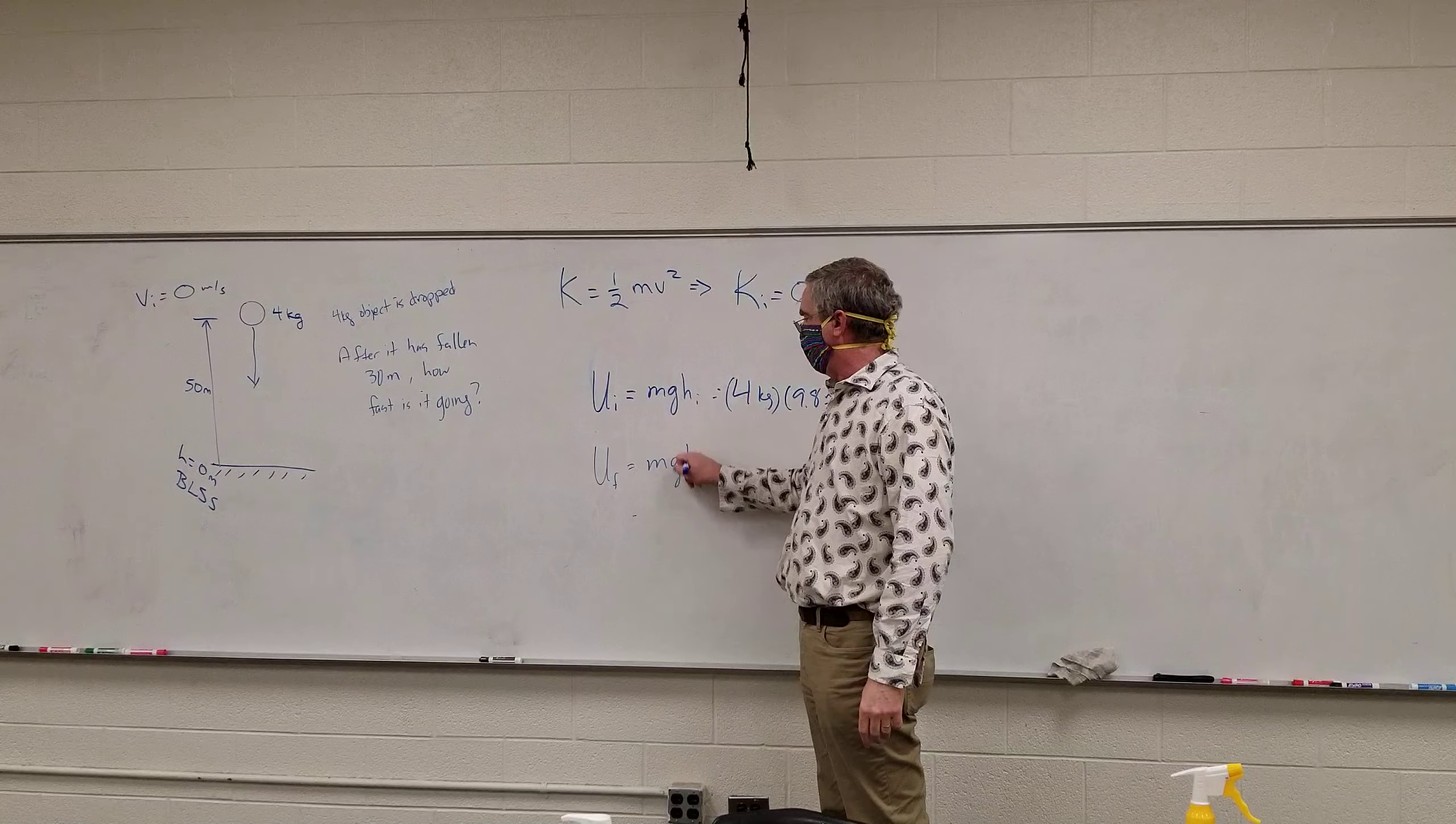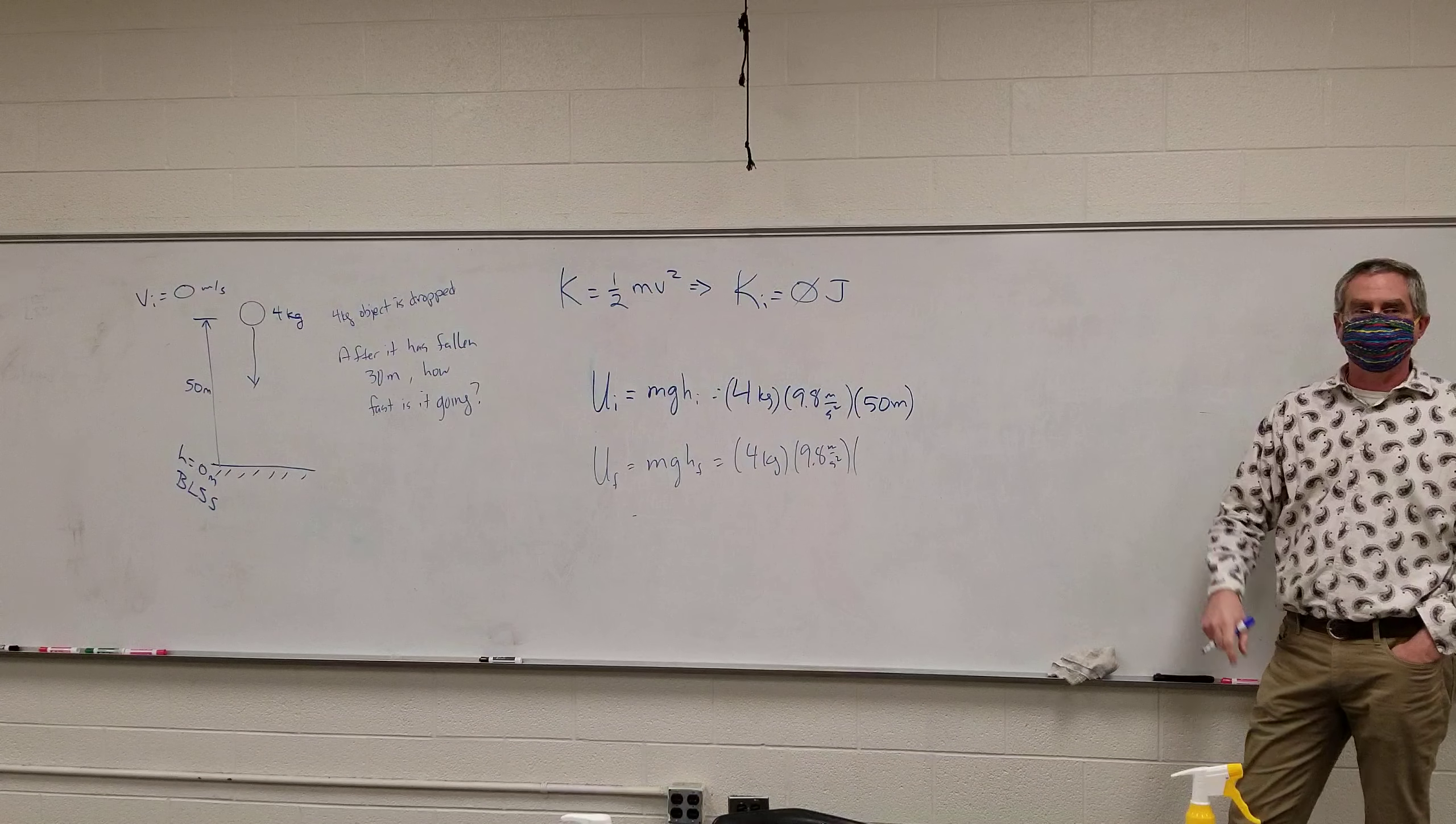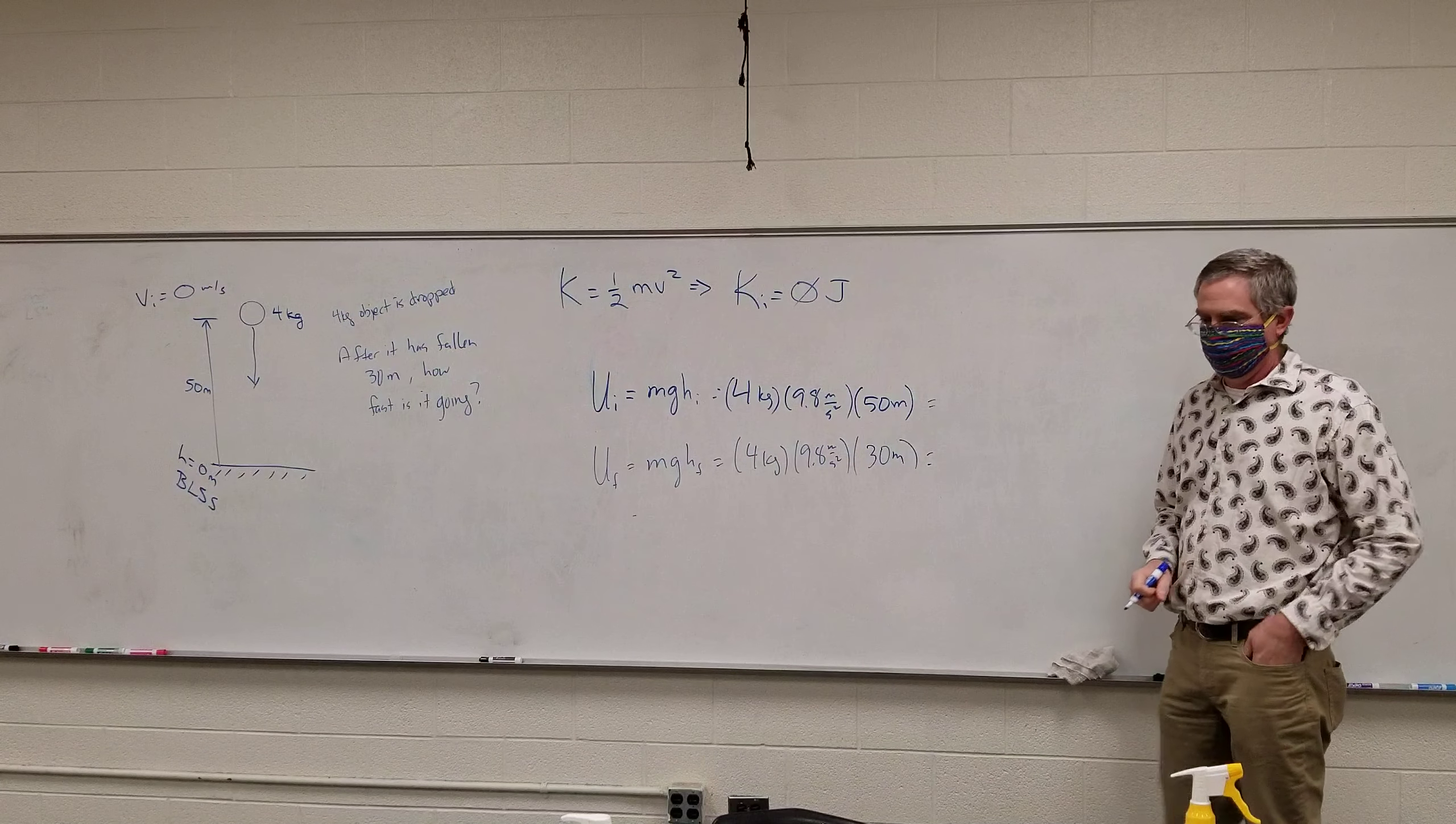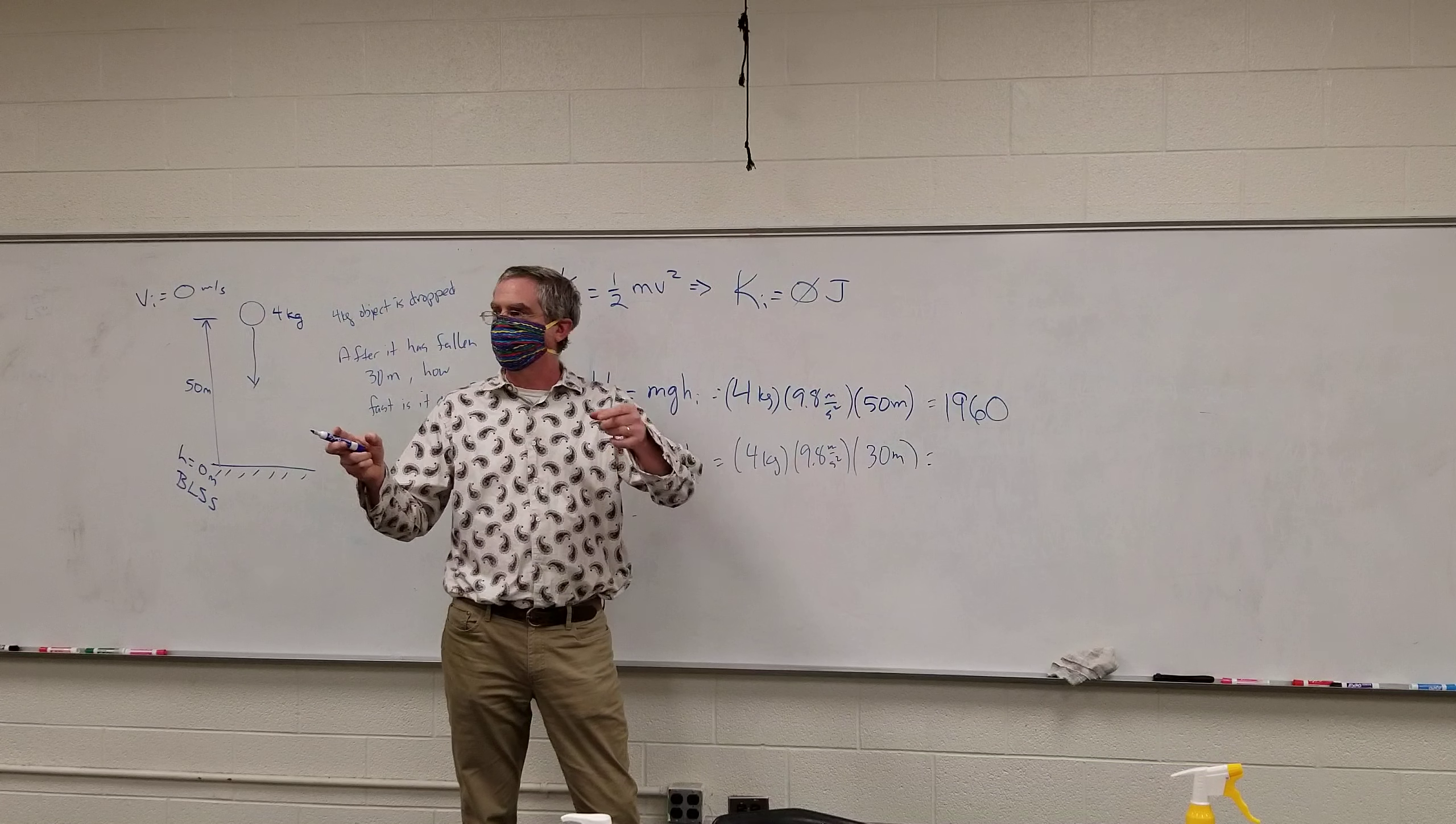All right. U final. M, G, H final. It's still 4 kilograms times 9.8 meters per second squared. That hasn't changed. What is the final height? Zero? No. This one is sort of set by the problem. 30. 30. All right. We actually need to do some calculations here. What is the initial potential energy? Has anyone calculated it yet? Can I ask you to borrow a couple of minutes? 1,960. 1,960? Mm-hmm. We get confirmation? Yes. Got a couple nods. All right.